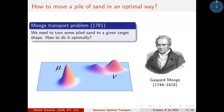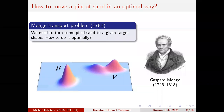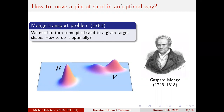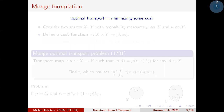Let me start from the beginning, which means the 18th century. It all started with Gaspard Monge, who asked the question: how do we move a pile of sand? Suppose you have a pile of sand here and you want to move it to some other place, or just reshape it so that it has a different shape. The question is, how are you going to do it optimally? Optimally means you want to minimize some cost — the cost of transport, the number of ways back and through that you need to make, or whatever else you can imagine.